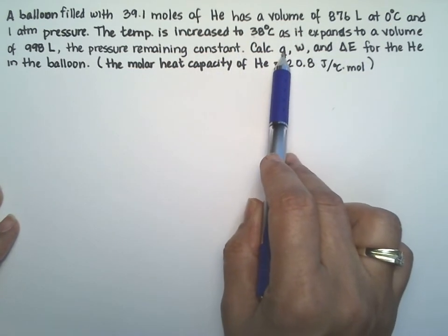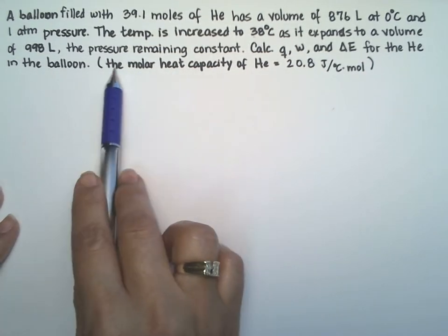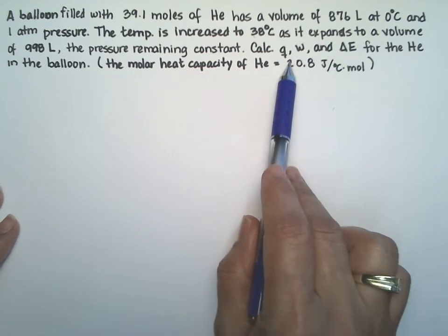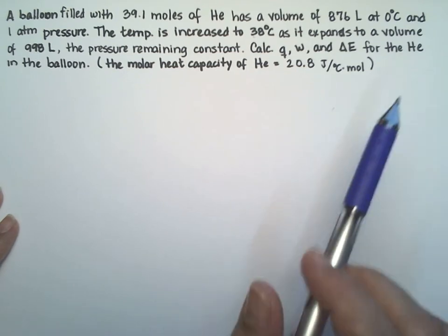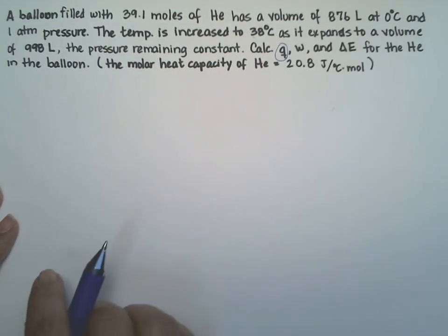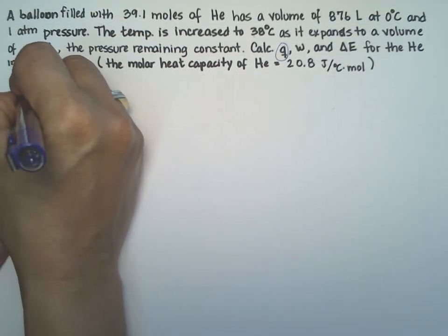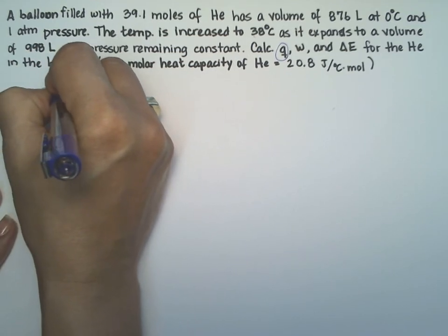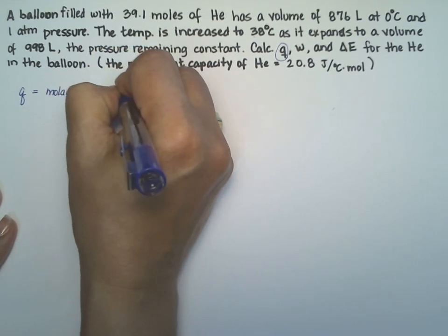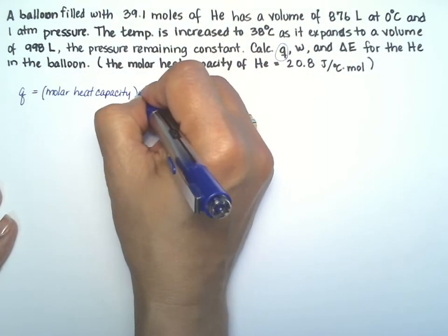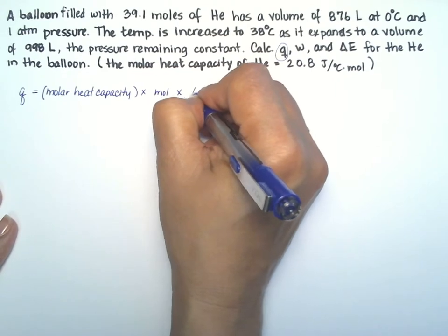They want us to calculate the heat, the work, and the change in energy for the helium in the balloon. And they're nice enough that they actually give you the molar heat capacity of helium as 20.8 joules over degrees Celsius times moles. So let's start with the heat because we can use the molar heat capacity here. We have a formula that tells us that the heat equals the molar heat capacity times the moles times the change in temperature.